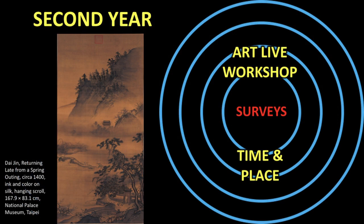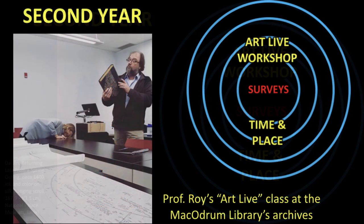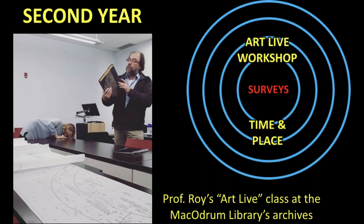In second year, you start to focus in more. Second-year classes tend to focus around specific areas - for example, this is the sort of image you might see in a course on Chinese painting. My second-year courses focus on Renaissance Italy and the European 17th century. We also start to introduce an experiential learning component with our ArtLive workshop, with a greater emphasis on time and place. The ArtLive workshop is an experiential learning course - here you can see Professor Roy with his class at the archives in the Macrodrom Library, getting their hands on materials and starting to look under the hood at how the knowledge you study in the classroom is actually being produced.